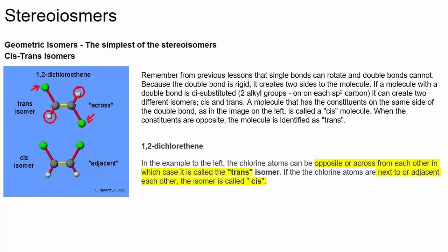Sometimes students get confused about what we're having across and what we're having adjacent. If you look at the hydrogens being across from one another, that's called a trans isomer — trans means across. Or we can have the hydrogens on the same side, and that's called a cis isomer. So although both of these compounds are called 1,2-dichloroethene, this one is trans-1,2-dichloroethene and this one is cis-1,2-dichloroethene.